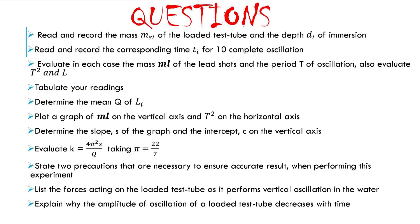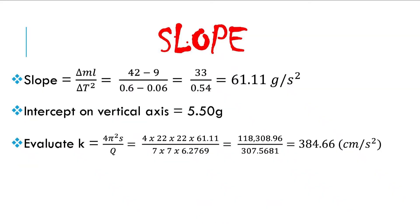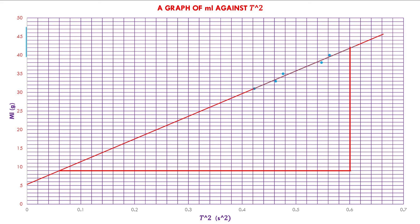The question asks us to plot a graph of the mass of the lead shots on the vertical axis against T squared on the horizontal axis. This gives us a straight line graph that makes an intercept on the vertical axis. The intercept on the vertical axis reads 5.5. For the slope, we find the change in mass of lead shots over the change in T squared using the upper and lower limits, giving us a slope of 61.11 grams per second squared.